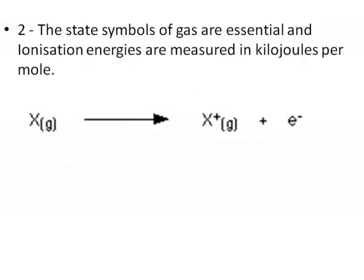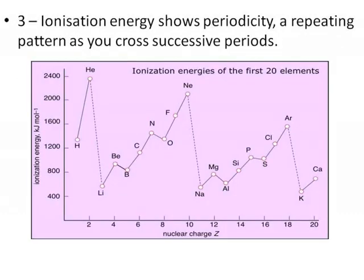Two, the state symbols of gas are essential, and ionization energies are measured in kJ per mole. Three, ionization energy shows periodicity, a repeating pattern as you cross successive periods.